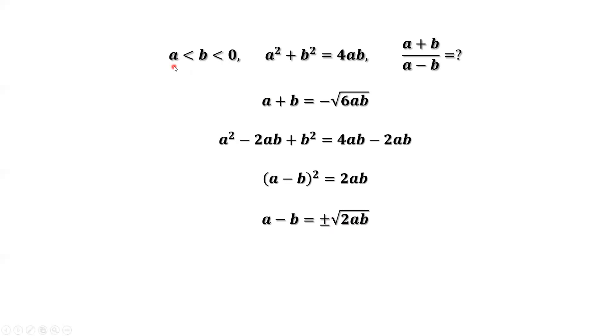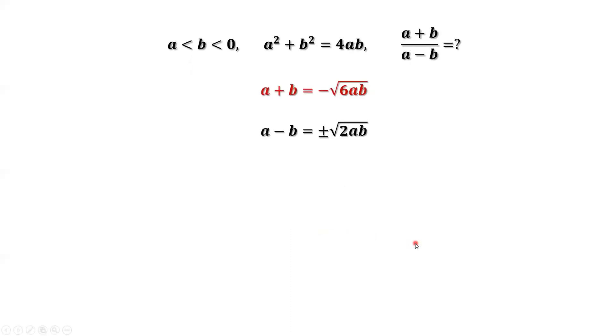Because a less than b, this implies a minus b is less than zero. We should take the negative one. A minus b equals negative square root of 2ab. We have the two results. One for a plus b, one for a minus b.